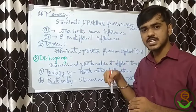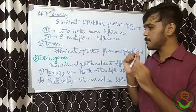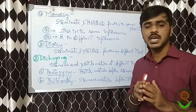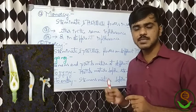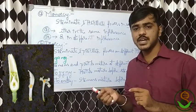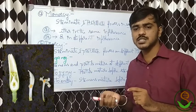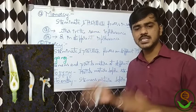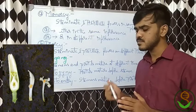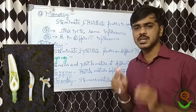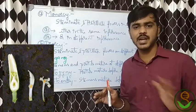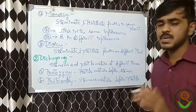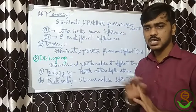Under dicliny there also comes the dioecious condition, in which staminate and pistillate flowers are present on different plants — examples are papaya and asparagus. Looking at the image, you observe three conditions: hermaphrodite, staminate, and pistillate. The hermaphrodite condition has been induced artificially, but naturally most papaya plants are either staminate — bearing only stamen-containing flowers — or pistillate — bearing only pistil-containing flowers. Dioecy is thus an example where staminate and pistillate are present on two different plants.